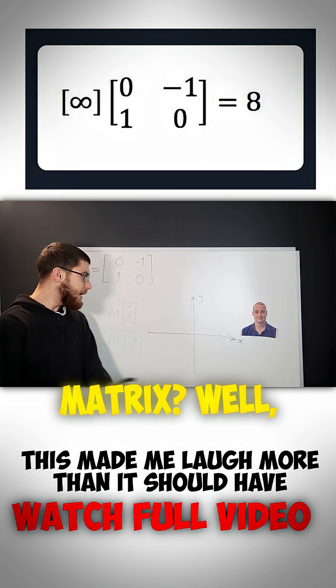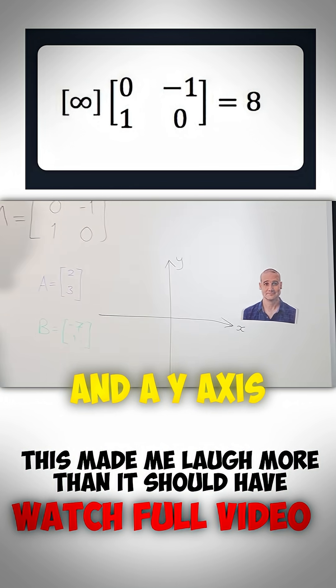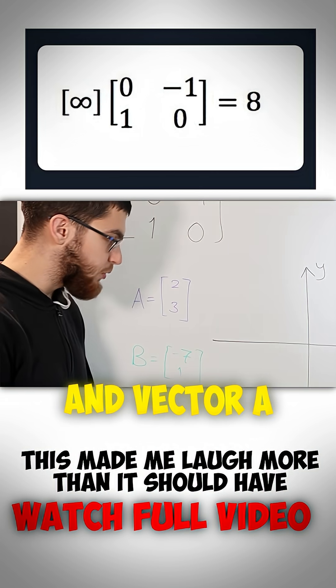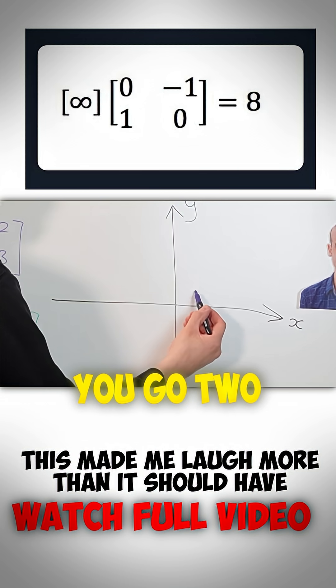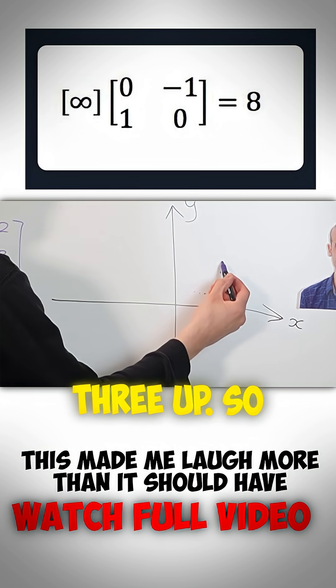So what actually is a matrix? Well, if you've got an x and a y axis, and vector A equals 2, 3, then that means to get vector A, you go 2 across and 3 up.